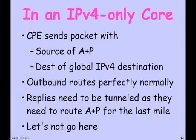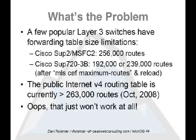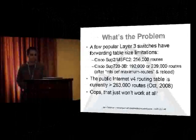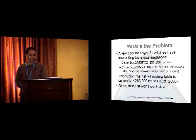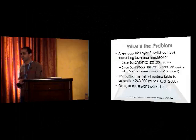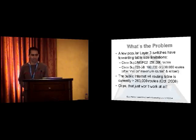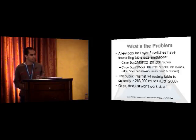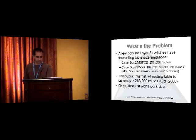We've talked about this many times — it's a very common thing. I just want to give you some real world experience, some feedback on stuff that we've actually deployed and how it's performed. The problem is really simple: a few layer 3 switches — not dogging on Cisco, just what we have most experience with — common platforms like the Sup2MSF-C2 at 256,000 routes, Sup723B at either 192K by default or 239K if you repartition the TCAM and reboot. The public internet routing table is now 263,000 routes, approximately. That just doesn't work at all. I don't know how many of you have experienced what happens when forwarding tables get overrun, but it usually isn't a good result, and it's not something you want to show up on your annual review.